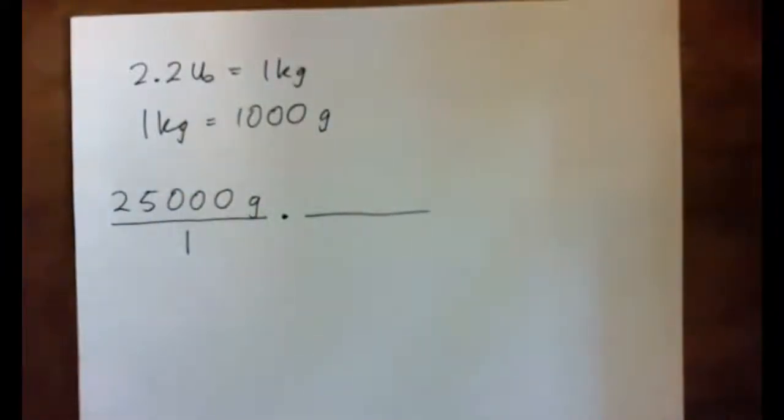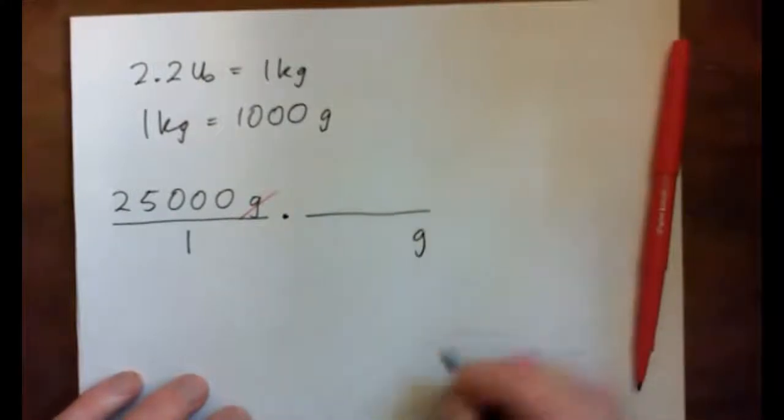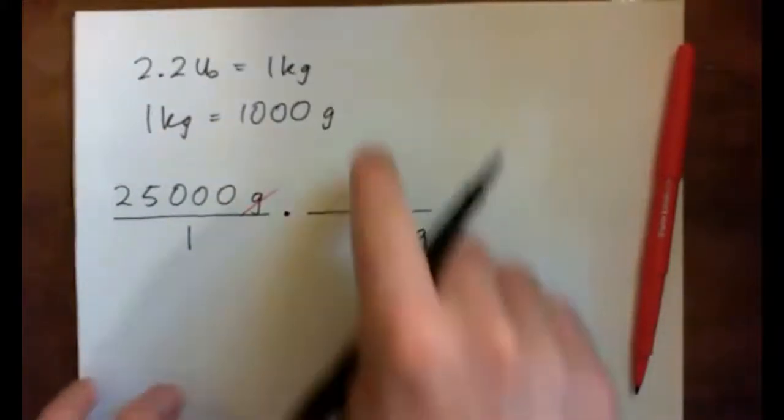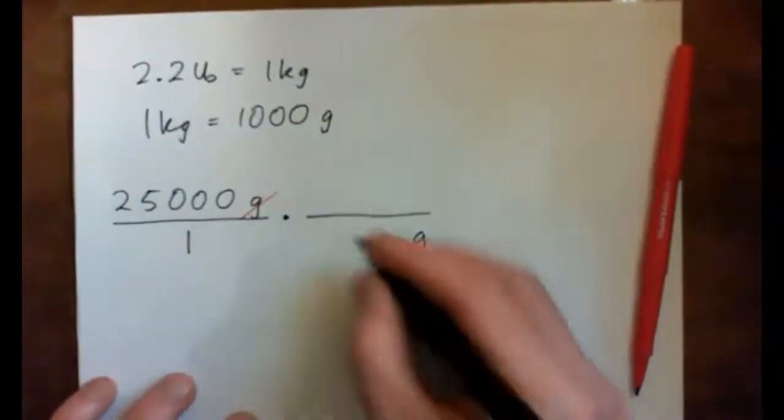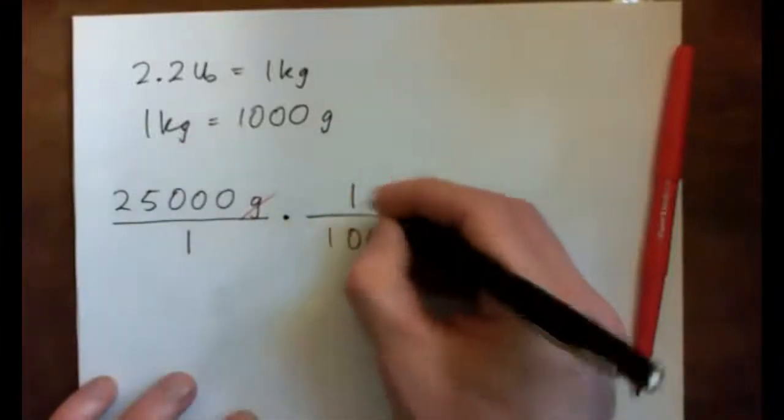The unit analysis trick is I want the grams to cross-cancel, so I need a gram down here. So what I do is I construct this unit fraction, 1,000 grams is equal to 1 kilogram.